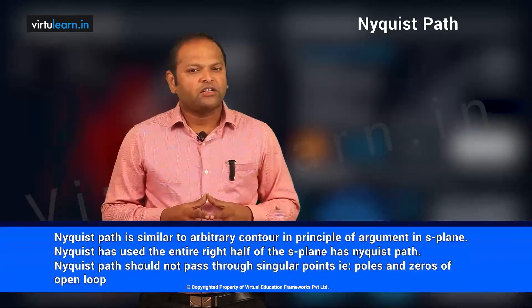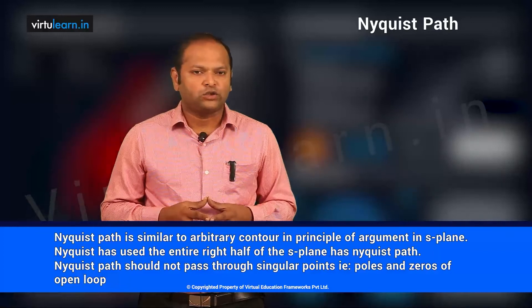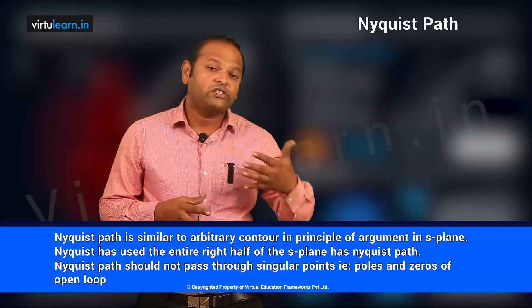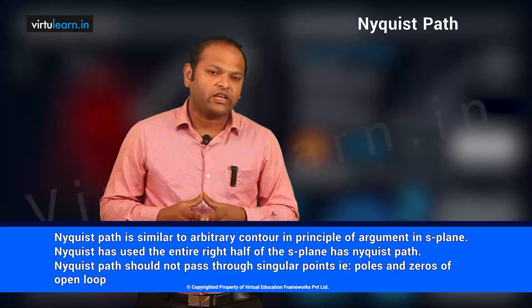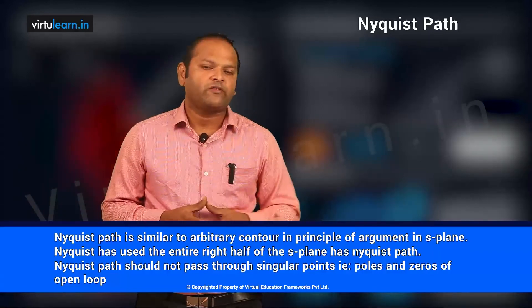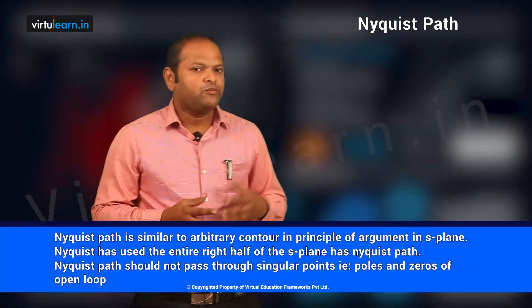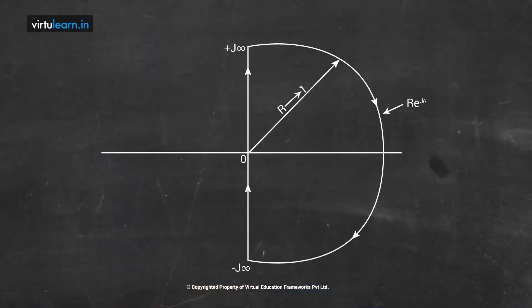Now let us see how to plot the Nyquist plot. To plot the Nyquist plot we need to look at what is the closed contour or arbitrary contour which we have taken — called the Nyquist path. The Nyquist path is basically an arbitrary contour or a closed path. Nyquist used the entire right half of the S plane as the Nyquist path. For a type 0 system there are no poles in the open loop transfer function, and the Nyquist path direction is clockwise.